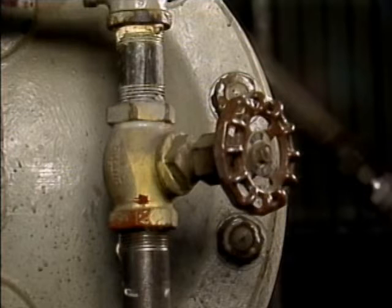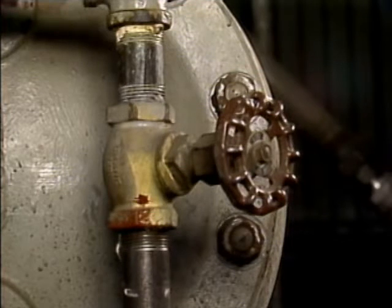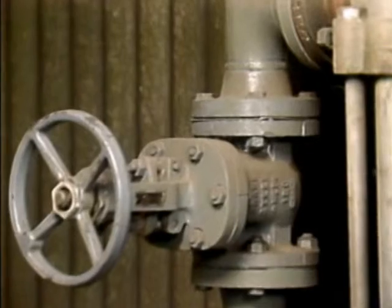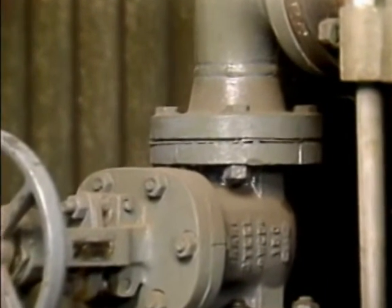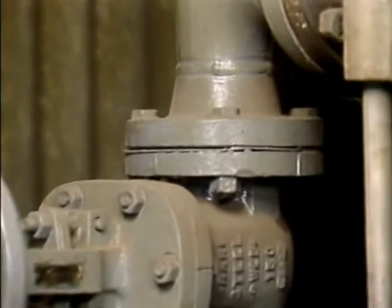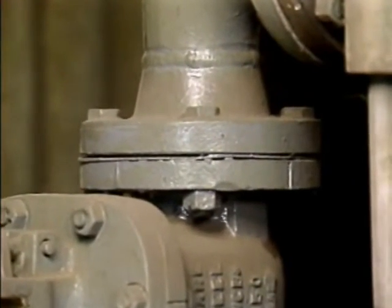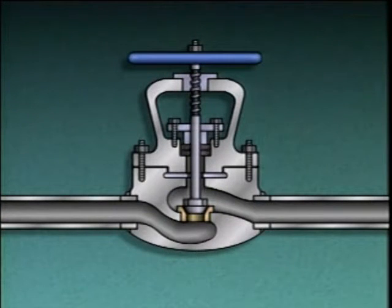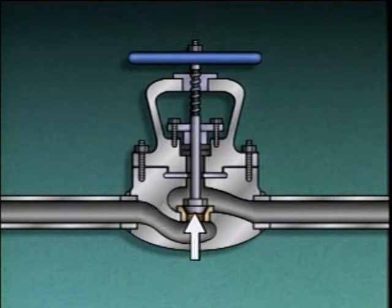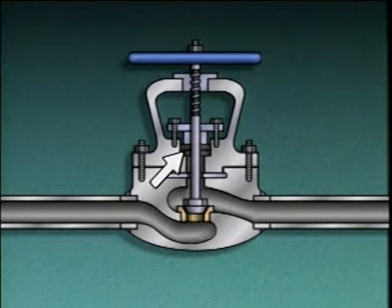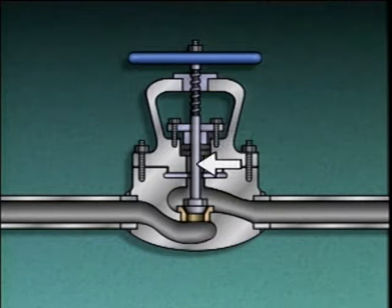Threaded connections are generally used on small valves in low-pressure systems. Flanged connections are commonly used where operating conditions may require frequent valve replacement or repair. Other parts of a valve may include a seating area or seat, a disc, a bonnet, packing material, a packing gland, and a stem with a hand wheel attached to it.